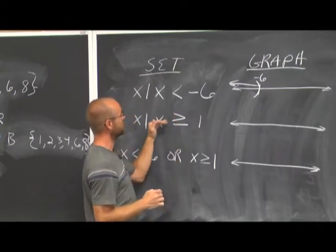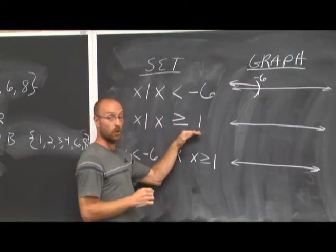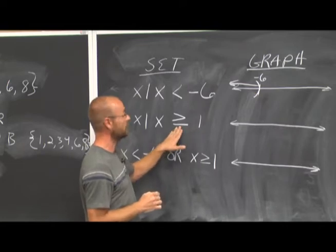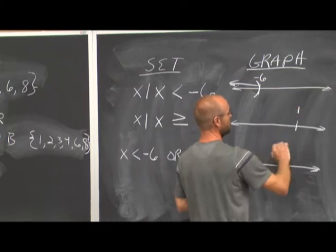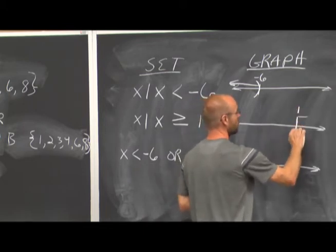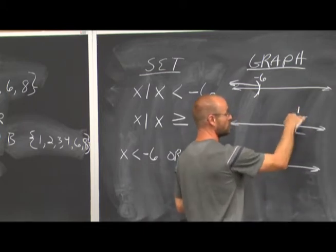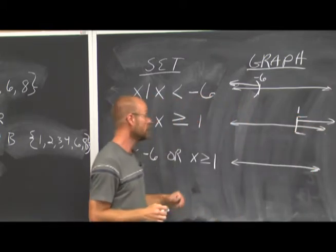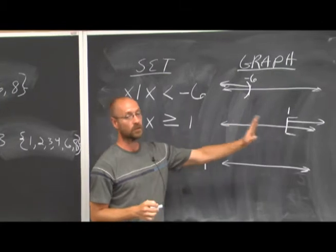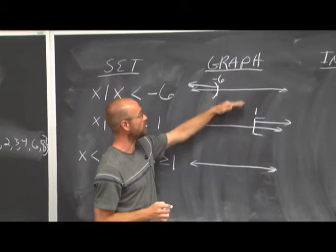If this is negative 6, x is less than negative 6. That means any value to the left, because it's less than. And I'm going to use my parentheses to indicate it does not include that value. But since it's less than, it's any value to the left. If we look at the next one, x is greater than or equal to 1.